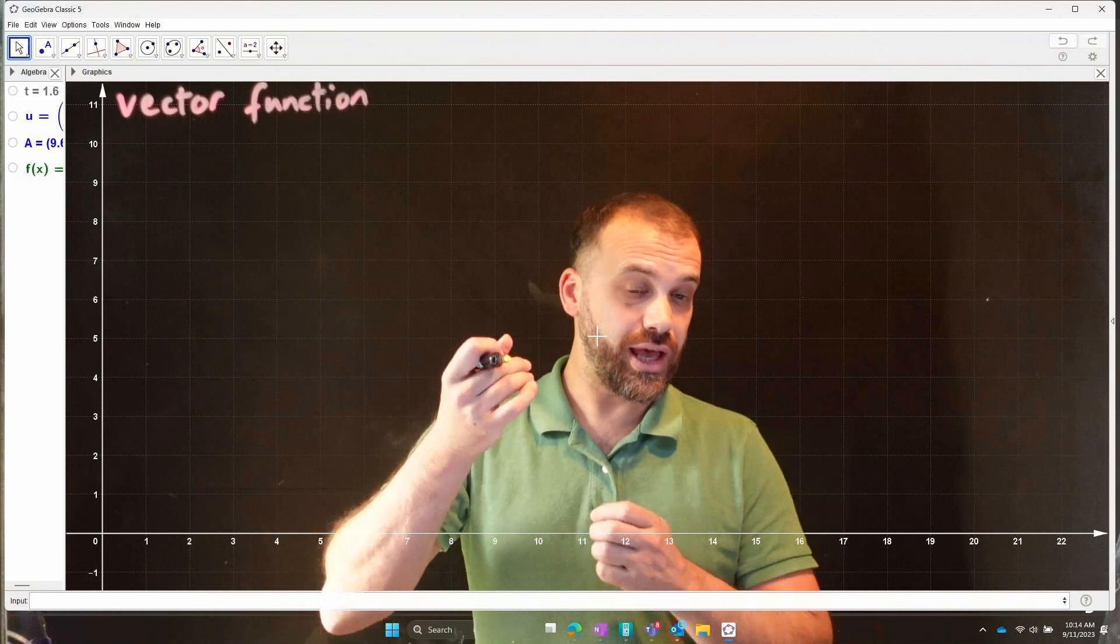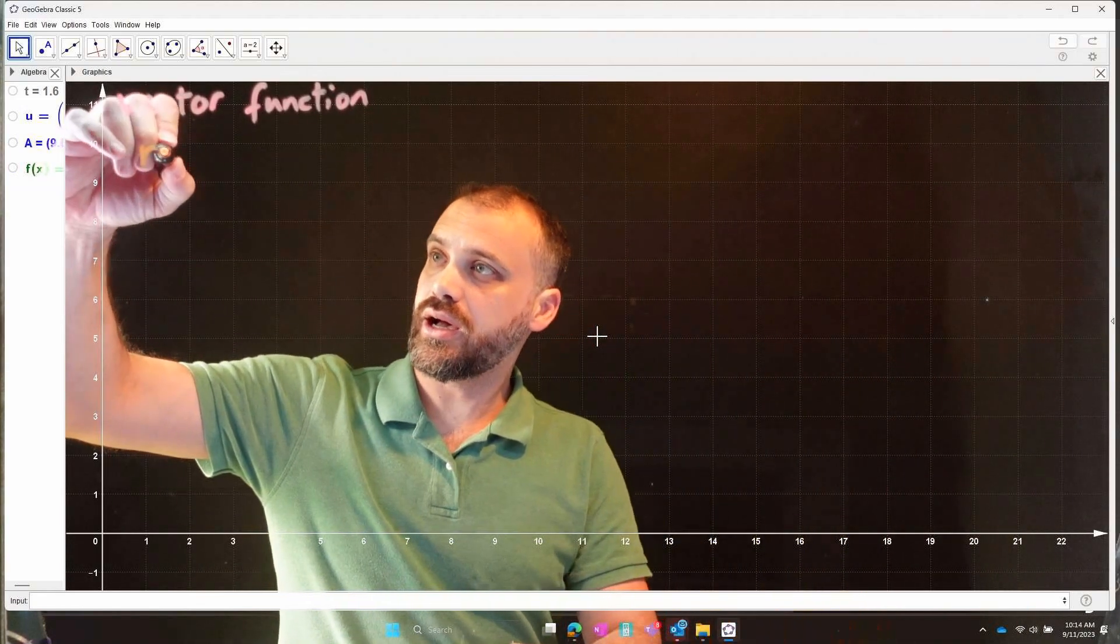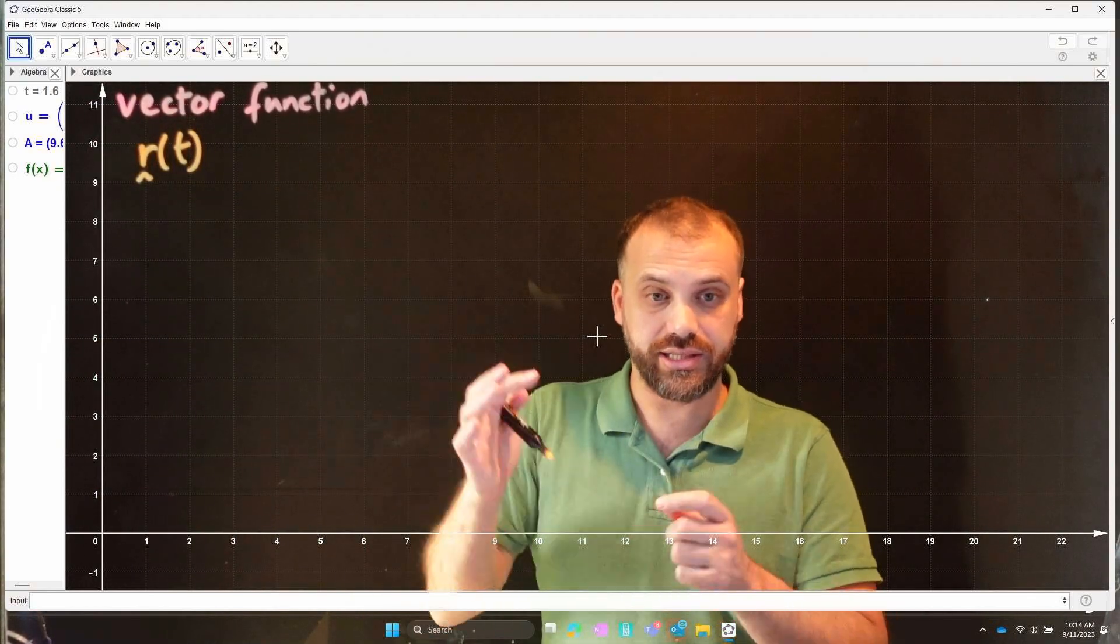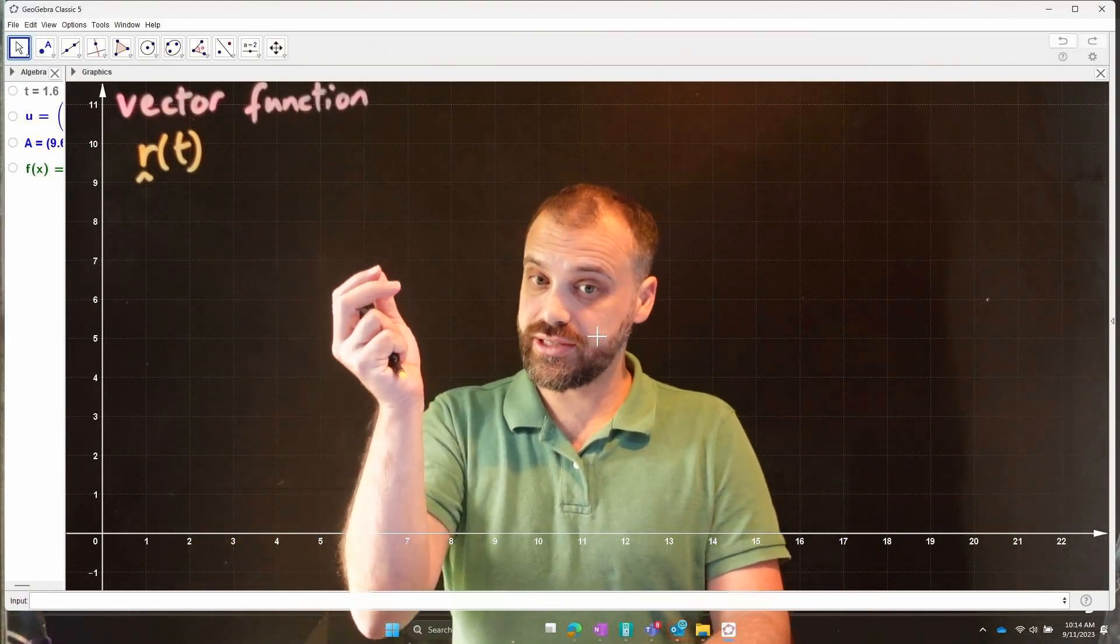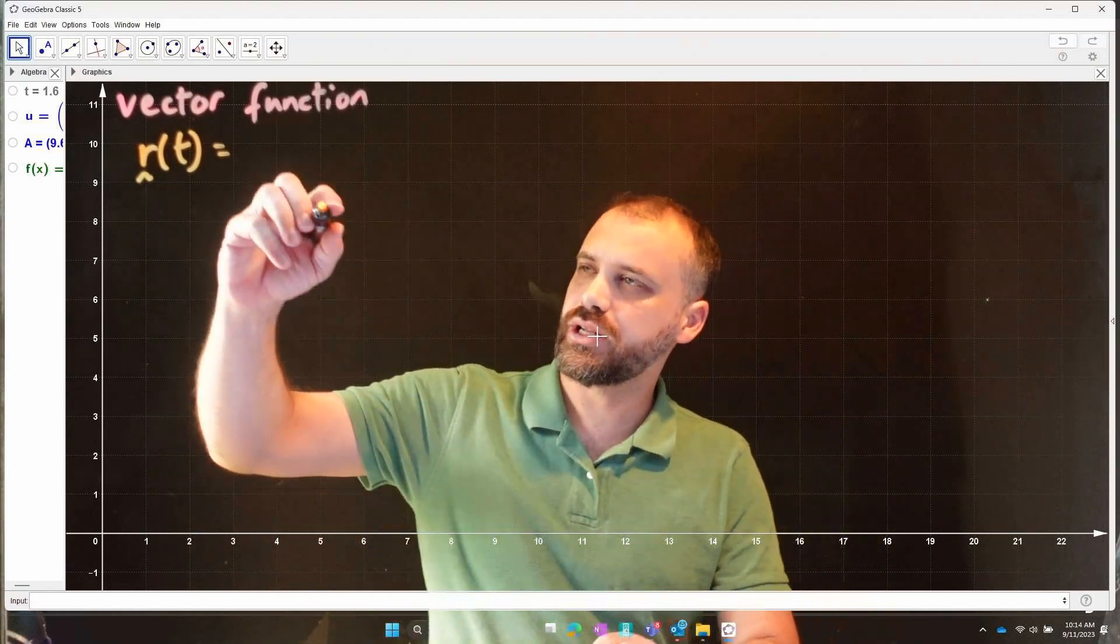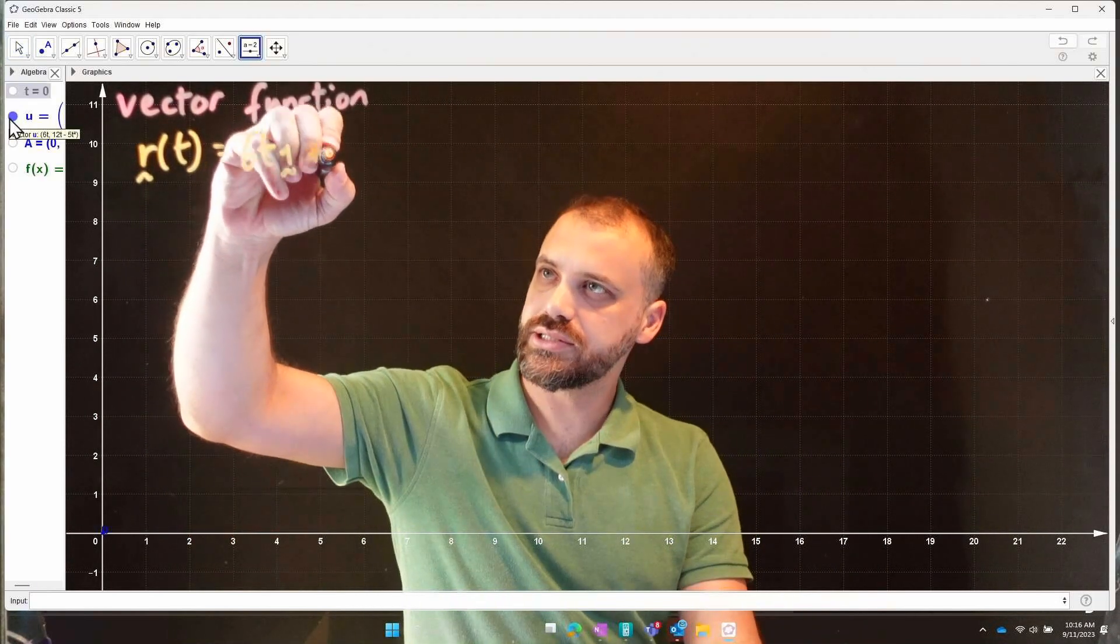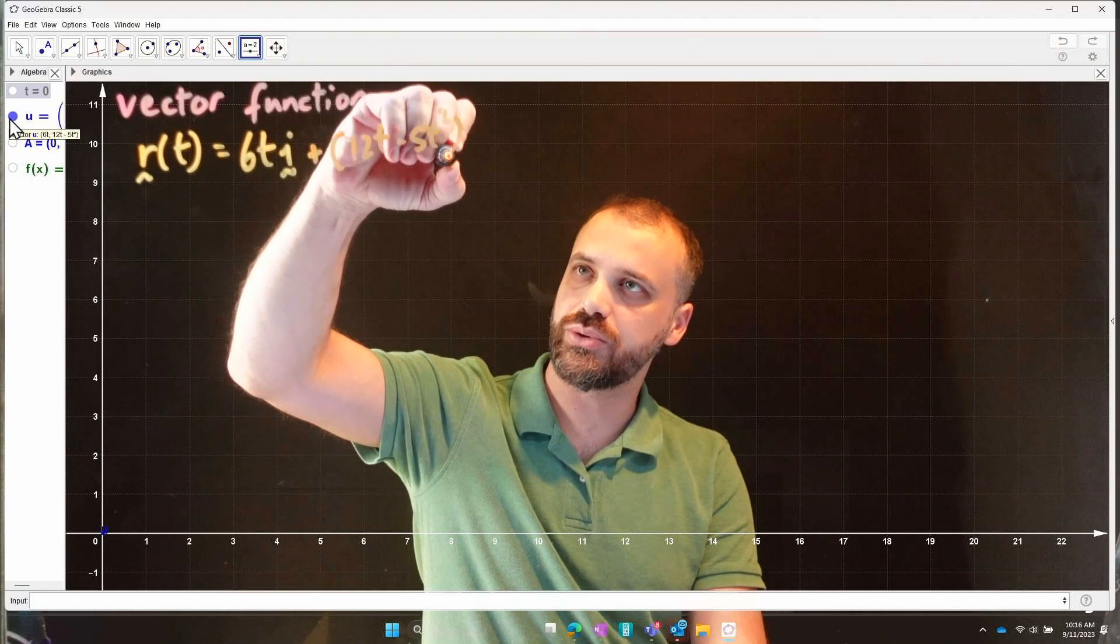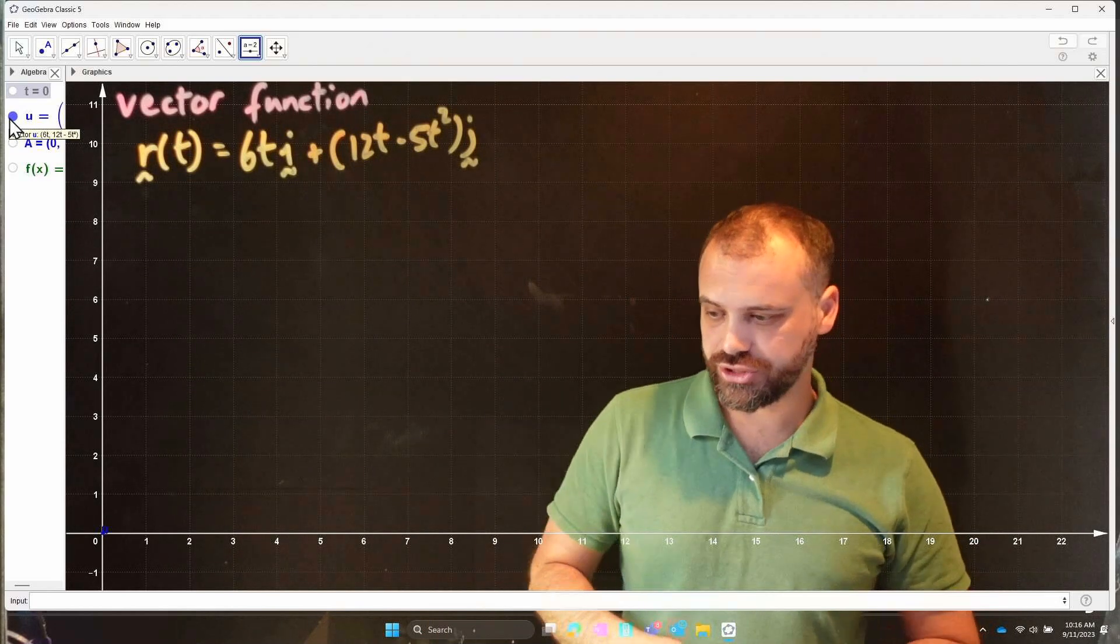All right. So let's write up what's called a vector function. And we're going to write it in a very specific way. Okay, r with respect to t. So instead of like f of x, we've got rt, right? Notice I've got my little squiggle here because this is a vector. So let's write it up. We're going to write it as 6ti plus bracket 12t minus 5t squared j. Okay. That is your first vector function.